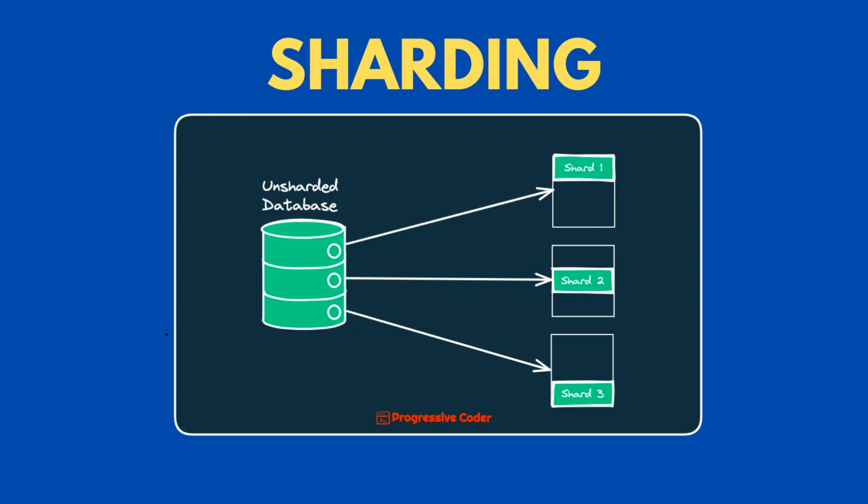Sharding and replication are two valuable techniques to scale your database. Sharding involves partitioning data across multiple servers based on a specific key. Each server on the shard stores a portion of the data. Queries are routed to the appropriate server based on the key. Sharding allows you to horizontally scale your database, also known as scaling out, by adding more machines to an existing stack. Think of these machines as helpers that share the overall workload and allow for more traffic. The shards are autonomous and don't share data or computing resources.